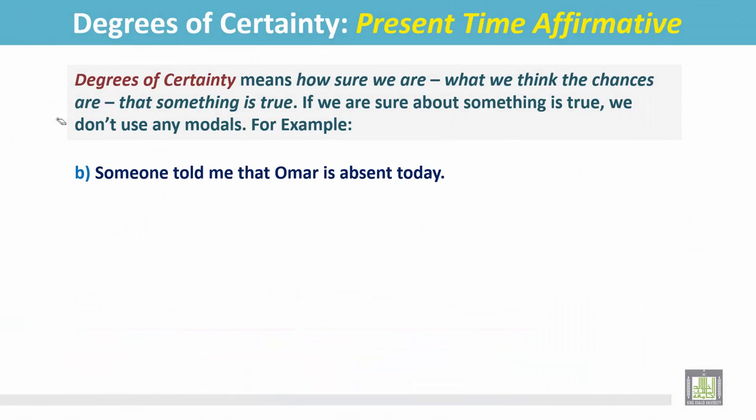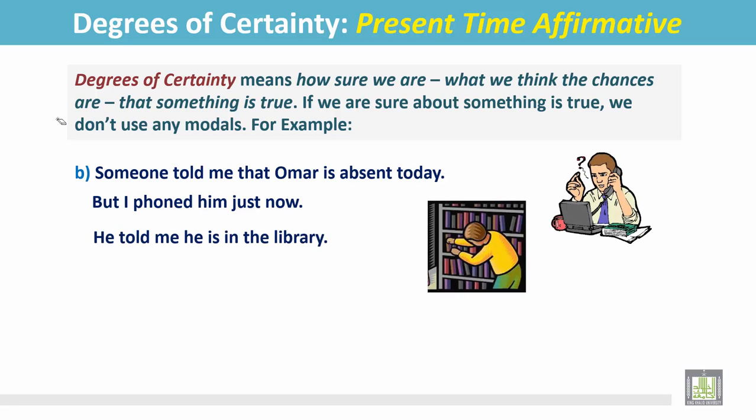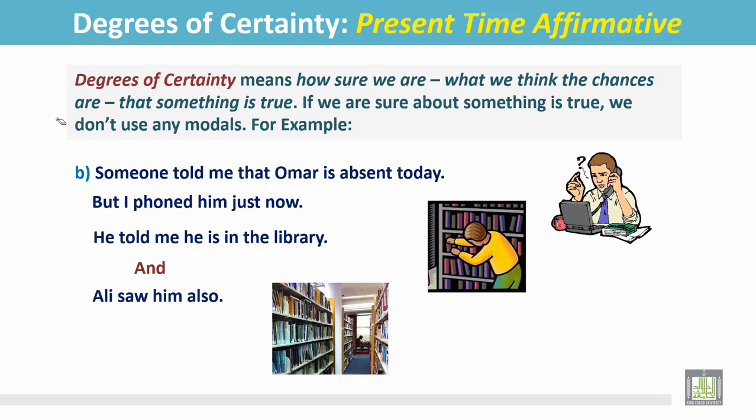We can see these examples. Someone told me that Omar is absent today, but I phoned him just now. He told me he is in the library, and Ali saw him also. So in this situation, we can say that he is in the campus and we are sure about it.